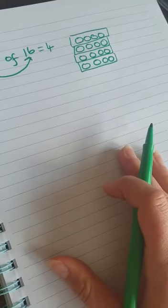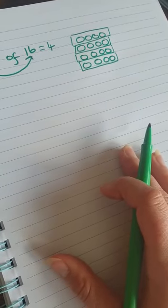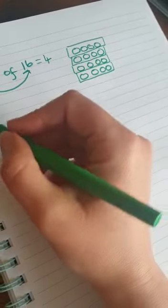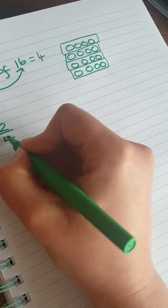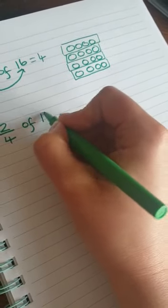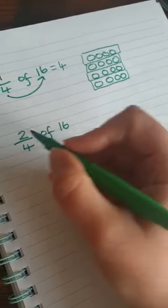When you get on to the bigger ones on B, C and D, I'm going to do B. And that is, what is two quarters of 16? Now, we still use the same step. So first of all, we're looking at the denominator first.